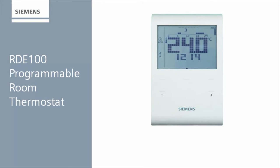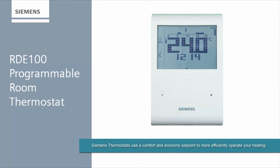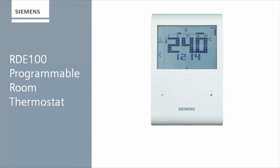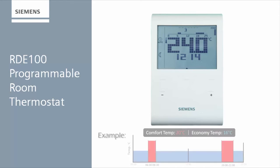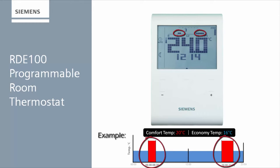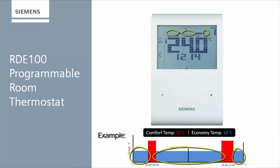This device has two modes, comfort and economy, which can be selected at 15 minute intervals throughout the day. Along the top of the LCD display, you will see a timer bar. Where you can see a visible bar, this will control your device at comfort temperature. Where the bar is invisible, this will control the economy temperature.